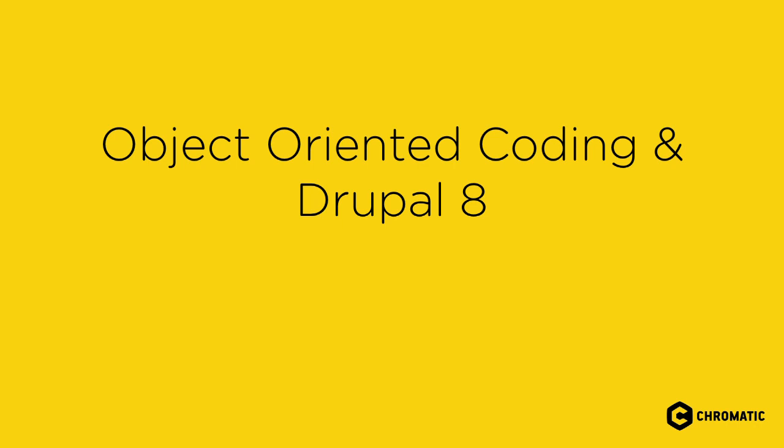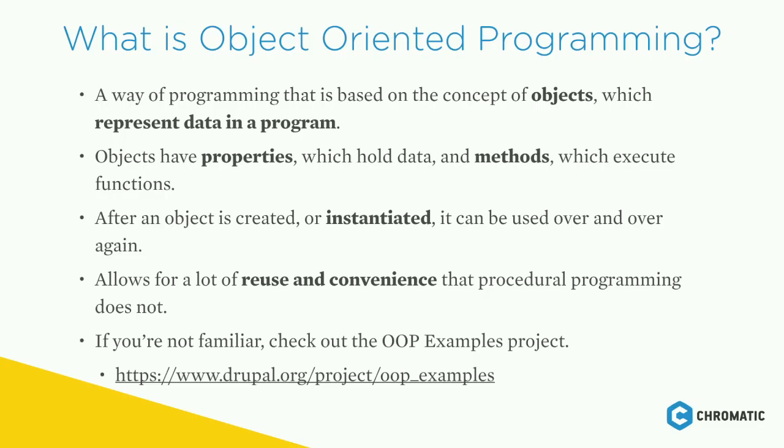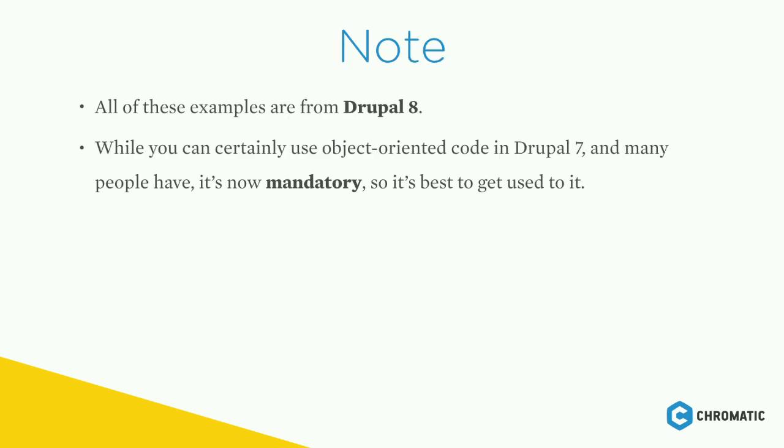Next, let's talk about object-oriented coding and Drupal 8 standards. Object-oriented programming, or OOP, is a way of programming based on the concept of objects, which represent data. Objects have properties that hold data and methods that execute functions. After an object is created or instantiated, it can be used over and over again. OOP allows for a lot of reuse and convenience that procedural programming does not. If you're not yet familiar with Drupal 8 and OOP, the OOP examples project on Drupal.org may be very helpful. In Drupal 8, OOP is mandatory.